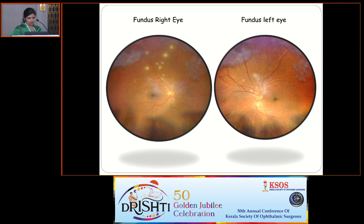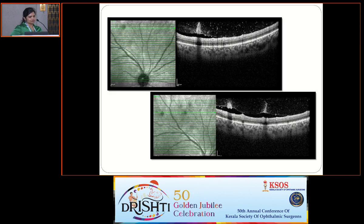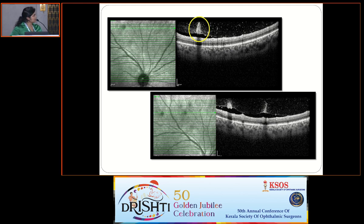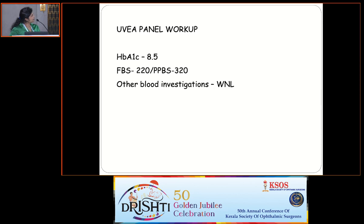On OCT of the lesion on the superior arcade, there was hyper-reflectivity of the inner retina with posterior shadowing along with vitreous aggregates extending into the vitreous cavity. From the uveitis panel investigations, HbA1c was 8.5 with deranged blood sugar levels. On probing the history, the patient was not aware of his diabetic status. He reported native treatment for varicose veins which may have included steroids.